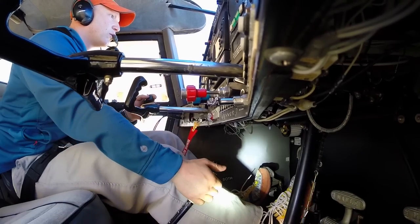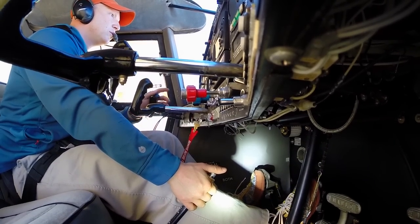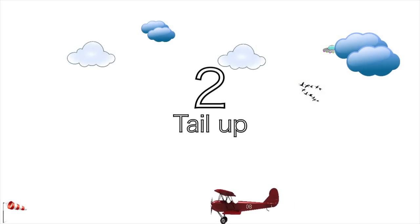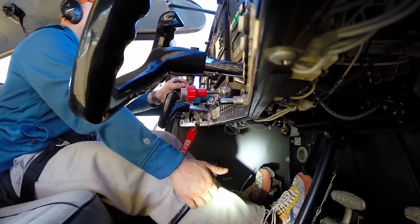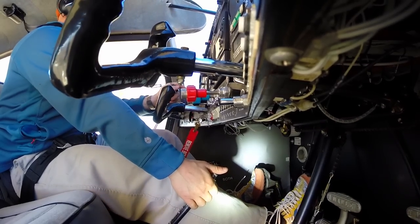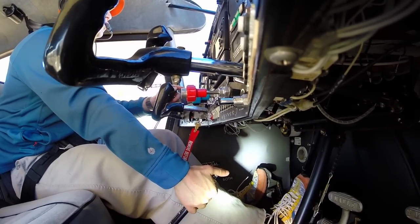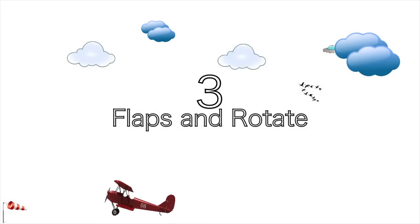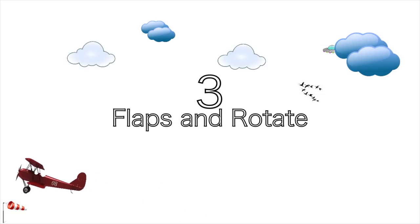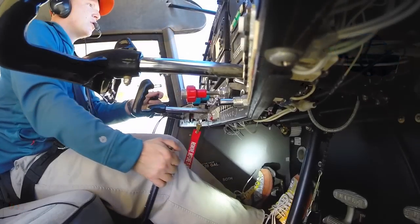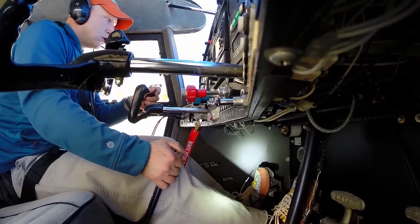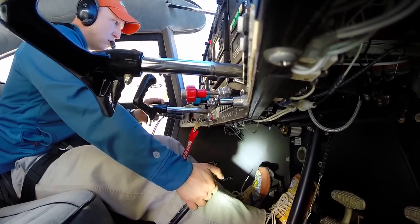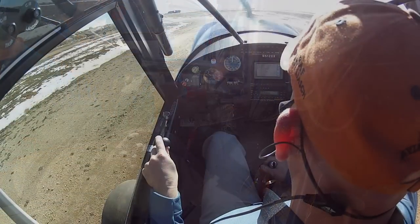With some first-class cheesy animation, we can define each segment of the takeoff roll. One: the initial roll — advance the throttle quickly, keep your eyes outside, and track your desired path. Two: your tail comes up — your hands and feet are busy and your eyes are outside, not on the airspeed. Three: flaps and rotate — here you pop the flaps and try to milk some energy efficiency while remaining in ground effect.